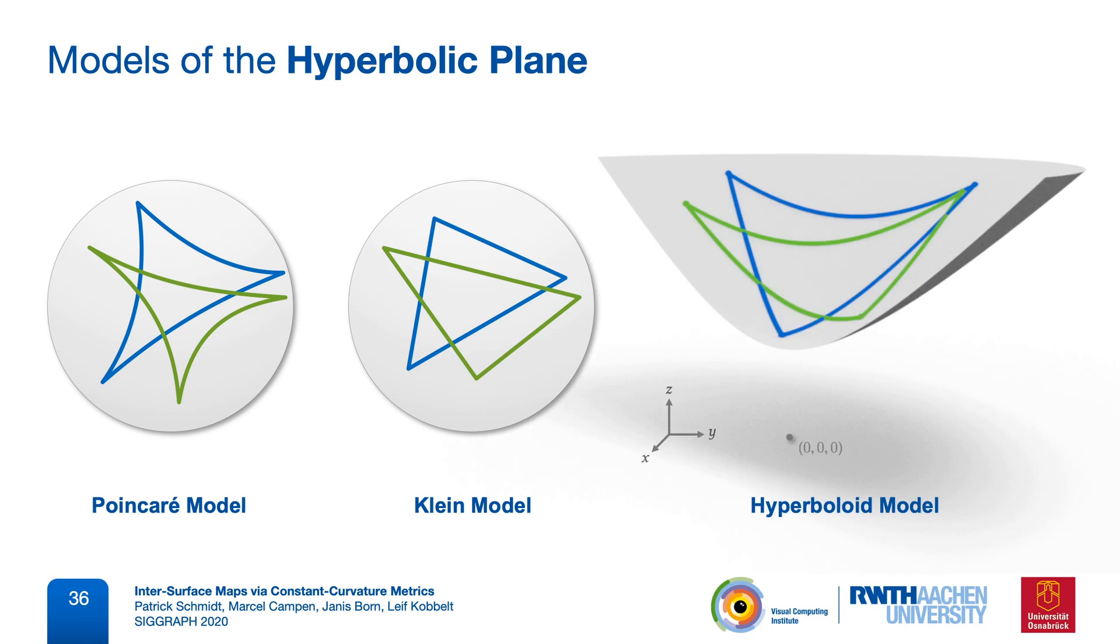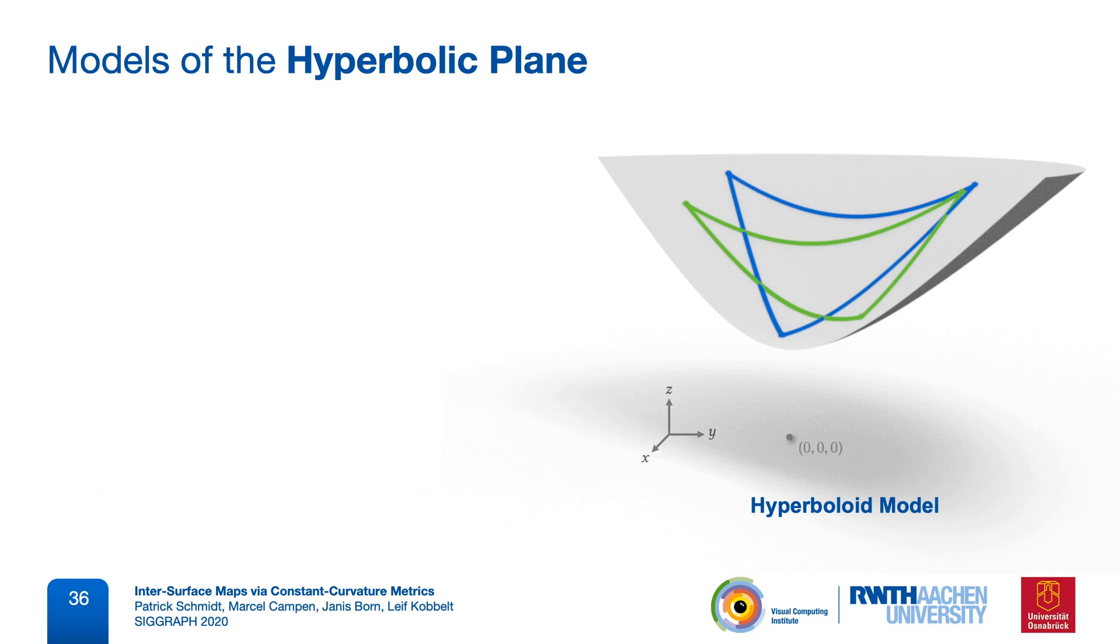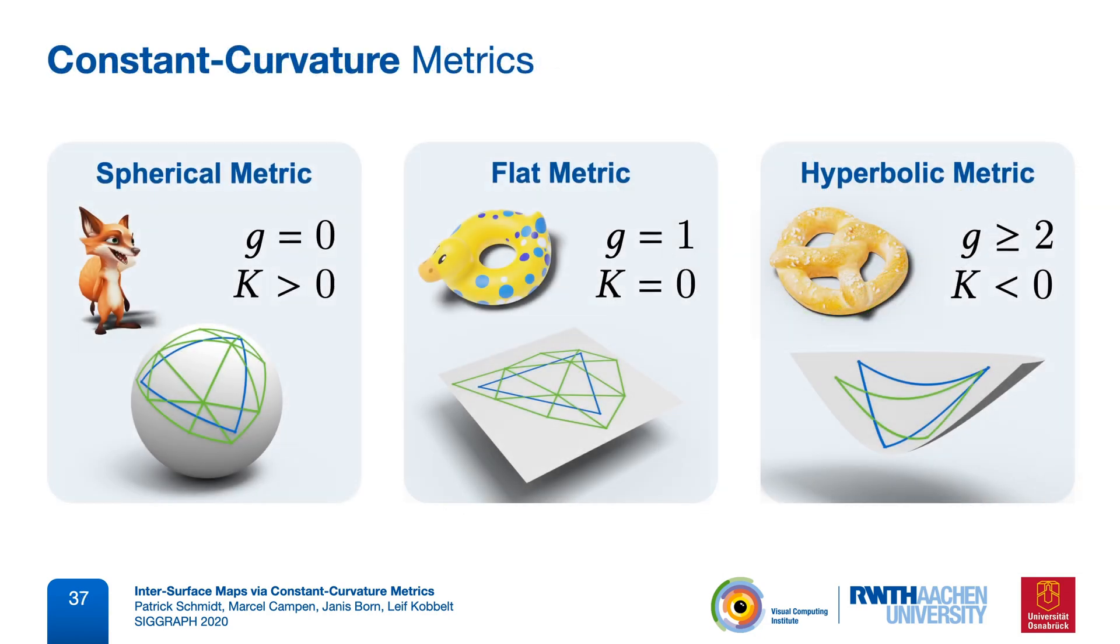In our case, we are only going to use the last one, in which the hyperbolic plane is mapped to the surface of this bowl-shaped hyperboloid. And we cut it open to see the inside. Edge lengths in this model will appear distorted, but we have a formula to compute their undistorted length.